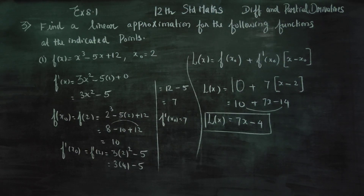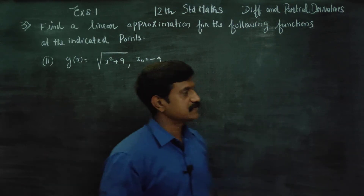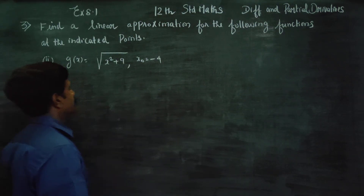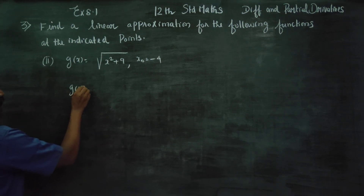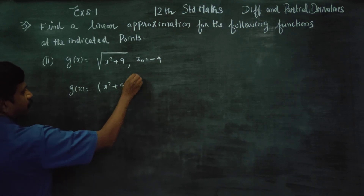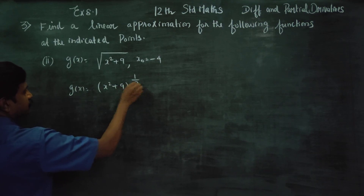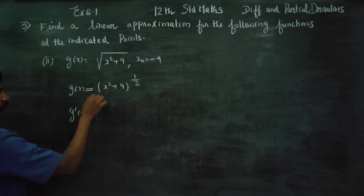Moving to the second sub-question: g(x) = √(x² + 9) at x₀ = -4. First, rewrite g(x) = (x² + 9)^(1/2) to make differentiation easier. I will start differentiating g'(x).